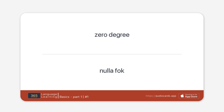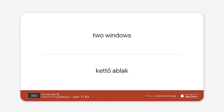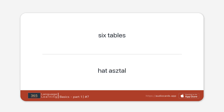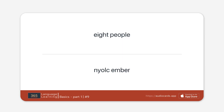Zero degree. One door. Two windows. Three houses. Four cars. Five books. Six tables. Seven dogs. Eight people. Nine bags.